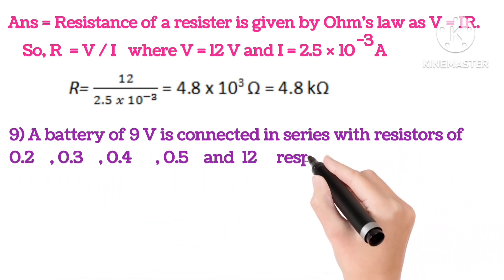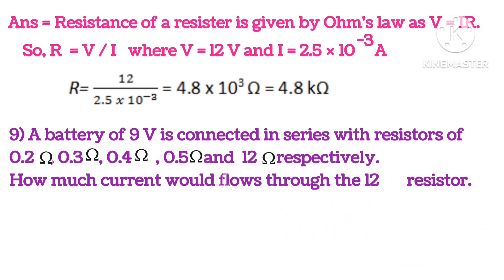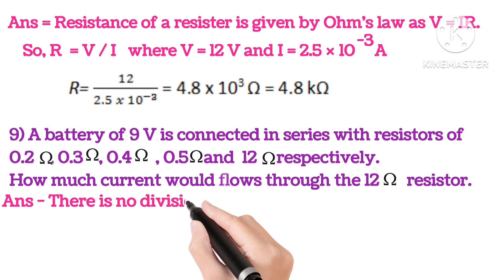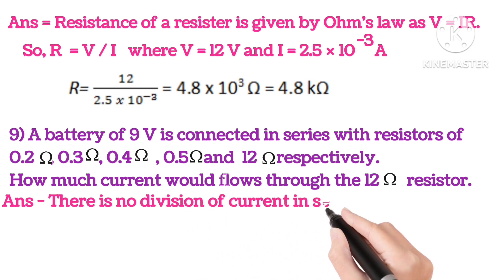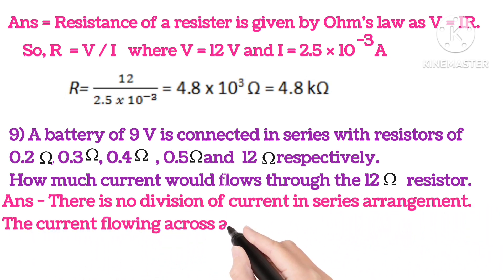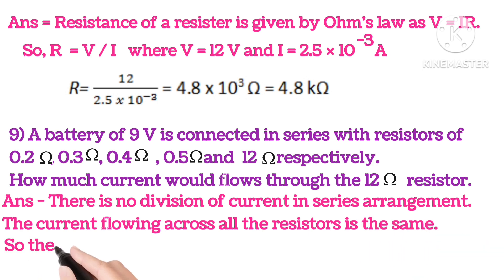Ninth: a battery of 9V is connected in series with resistors 0.2, 3, 0.5, 4, 0.5 and 12 respectively. How much current will flow through the 12 ohm resistor? Now, there is no division of current in series arrangement, so the current flowing across all the resistors is the same.